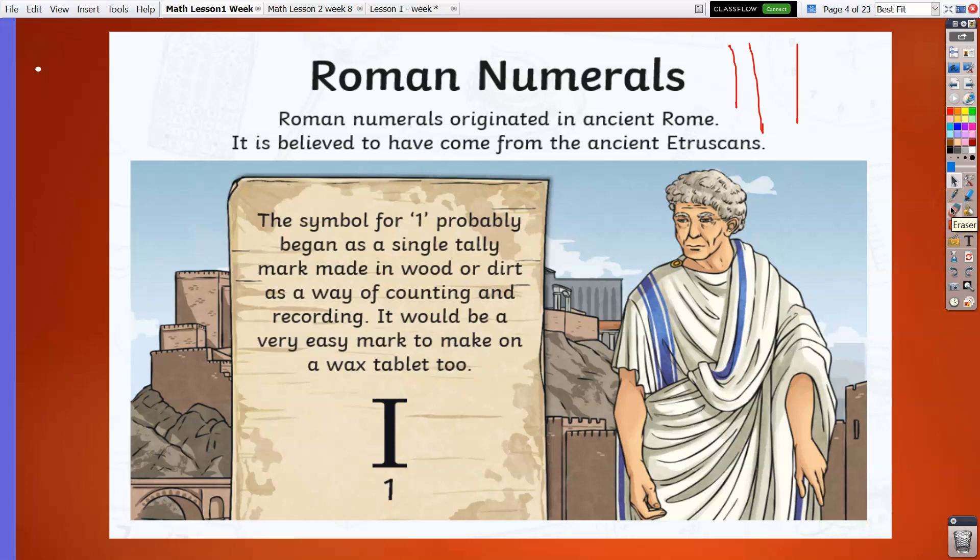Roman numerals originated in ancient Rome. It is believed to have come from the ancient Etruscans. The symbol for one probably began as a single tally mark made in wood or dirt as a way of counting and recording. It would be a very easy mark to make on a wax tablet too. Since the Romans or ancient Romans had no proper writing, they only used tallies during the old times. So it is also believed that one is a symbol for one tally mark, for two we got two tally marks, and three we have three tally marks.